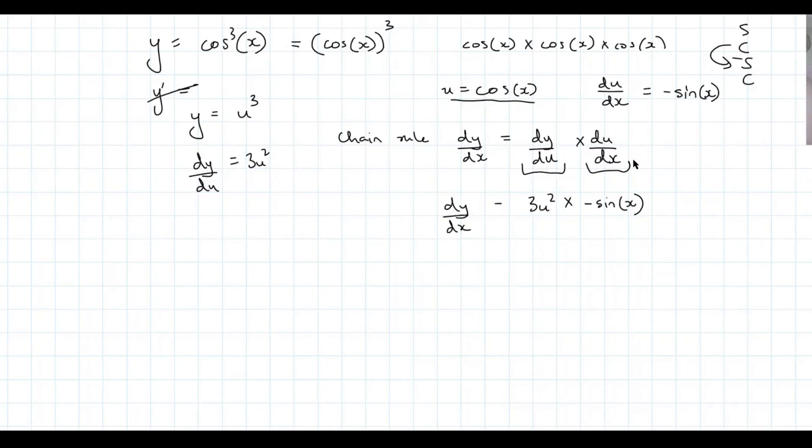So now, we know that this is going to be, so three times negative anything, it's just looks like negative one, so it's going to be negative three. u squared sine x, and then we know that u is cos x, so we need to swap that back in.